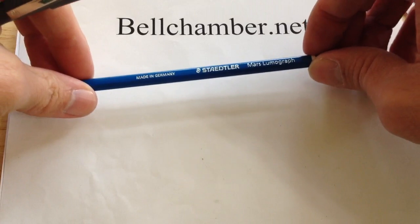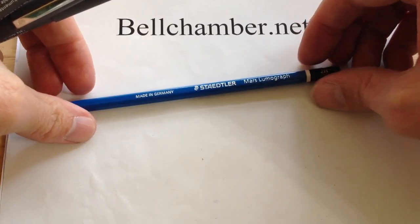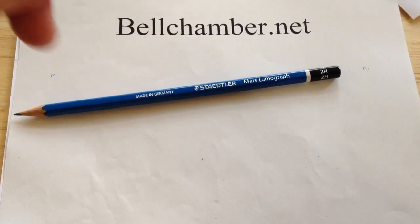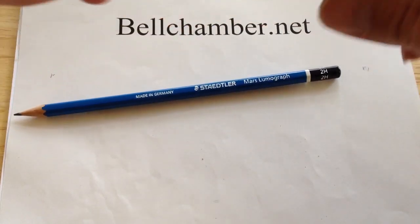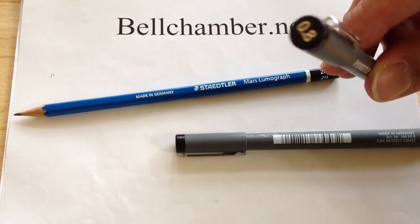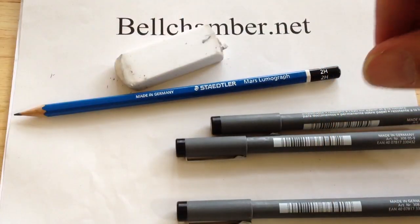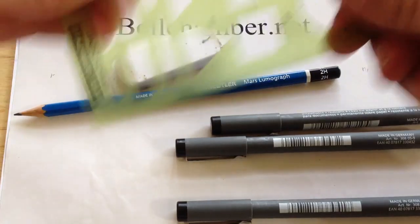So, to start drawing that little Triskel, you're going to need a hard pencil. I prefer to always use Staedtler products. I've got some pigment liners, so I've got a 0.5, a 0.8, and a 0.3. You're also going to need an eraser and a ruler.